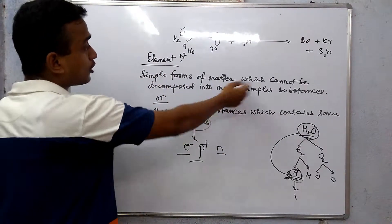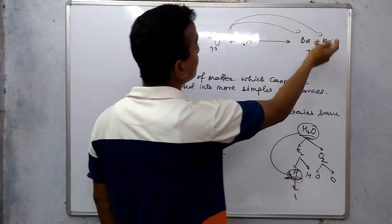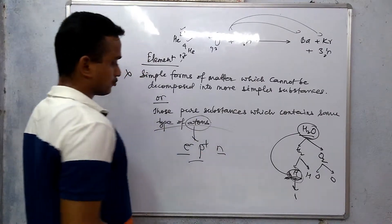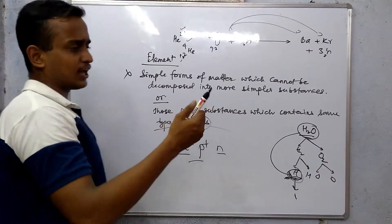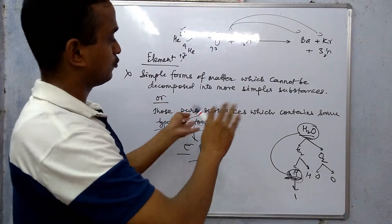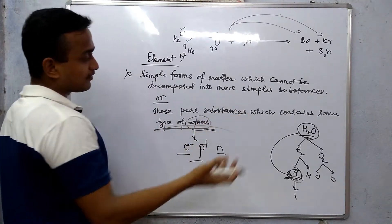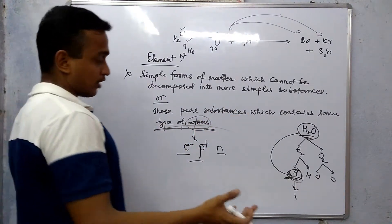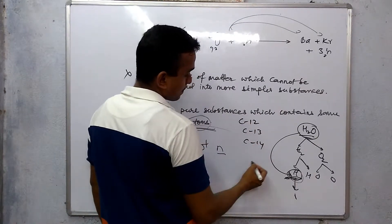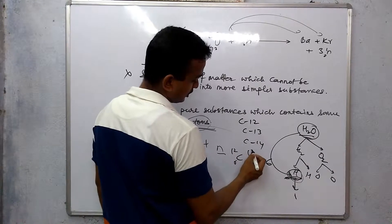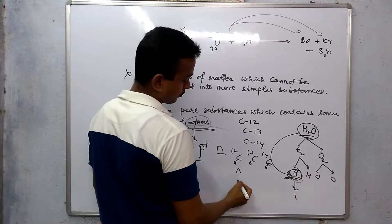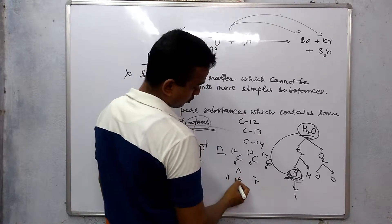You can't decompose it further, and it has the same type of atoms. When I upload in detail, I will explain it properly — I am running out of time, that's why I am going fast. Same type of atoms — when you have isotopes, for example carbon-12, carbon-13, and carbon-14. This is all carbon, but there is a difference. Everyone has the same atomic number but different mass numbers.